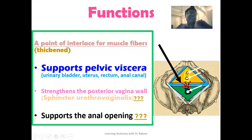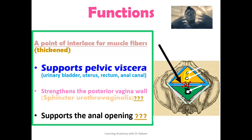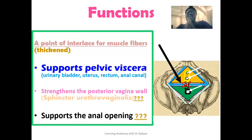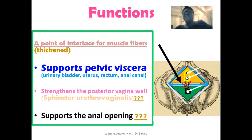Apart from the perineal body providing structural support for the pelvic viscera, it also helps to strengthen some of the structures located around this region. It does this because some of the fibers that hold these structures in place also contribute to its formation, creating an alignment that helps to control and support them.